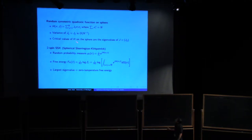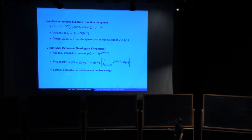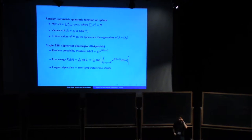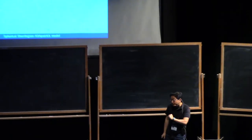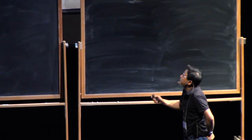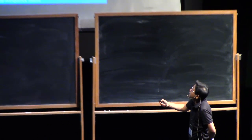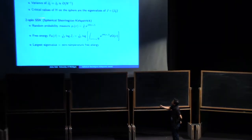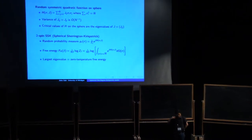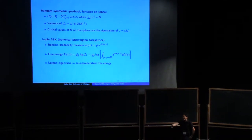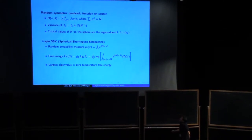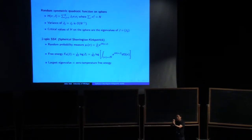The eigenvalue of random matrix J is a particular case when beta is infinite — in other words, zero temperature. So the largest eigenvalue can be thought of as the zero-temperature free energy. The natural question is: for finite temperature, what can you say?